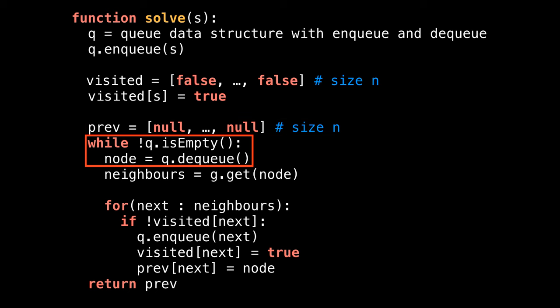Let's loop while the queue is not empty and pull out the top node from the queue by issuing a dequeue operation. Then reach inside the adjacency list and get all the neighbors of this node. Loop over each unvisited node. Once we find a next unvisited node, enqueue it to the queue, mark it as visited, and keep track of the parent node of the next node in the prev array. Once the queue is empty and our breadth first search is complete, simply return the prev array.